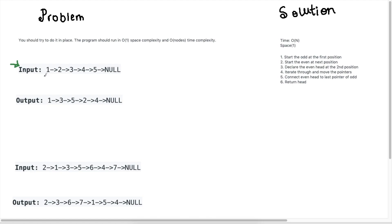So let's see the input and what we need to do here. We're given this input as a linked list and what we need to do is collect all the odd items and move them forward to the beginning, and collect all the even spots — and when I say spots I mean the indexes.